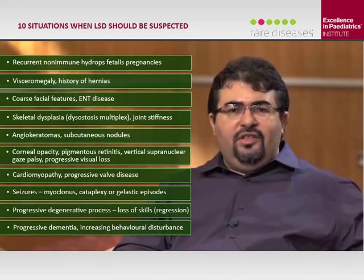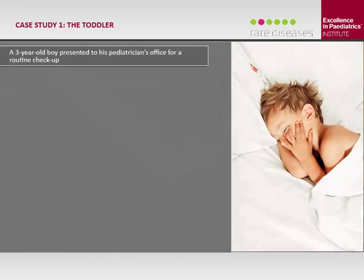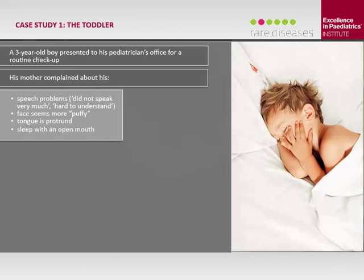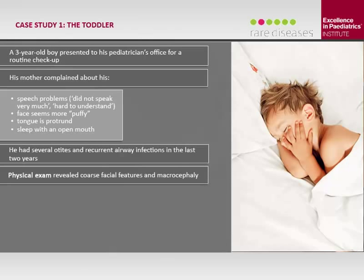Our first case study is a patient referred for evaluation at three years old because of developmental delay, especially in speech, and special facial features. The mother reported language delay, several airway infections including sinusitis and otitis, difficulty breathing, keeping the mouth open, and a very large tongue. On physical exam, you can see visceromegaly — especially hepatomegaly — coarse facial features, contractures and large joints, and a clawed hand.